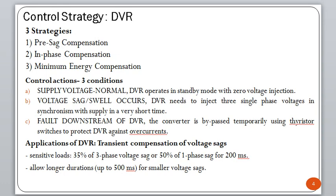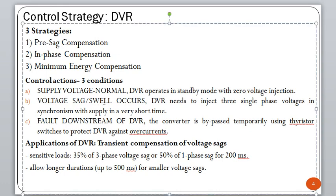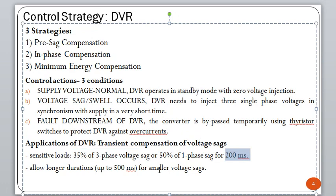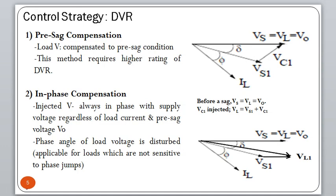DVR applications: it works for sensitive loads, protecting them. It can compensate up to 35% three-phase voltage sag, and up to 50% single-phase voltage sag for a duration of 200 milliseconds. If the voltage sag is less than 35% but compensation is needed for a longer duration (e.g., 500 ms), it can compensate for that longer duration as well.